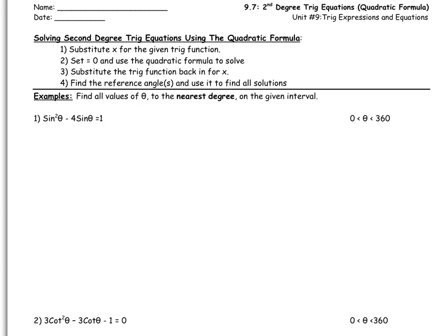But before we begin, let's just review the quadratic formula. I'm going to write it up here. So x equals negative b plus or minus the square root of b squared minus 4ac, all over 2a. We're going to use that a little later.